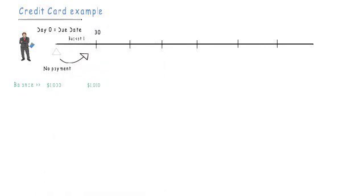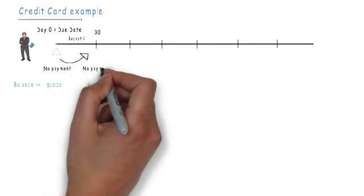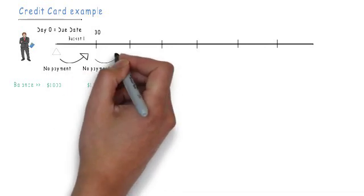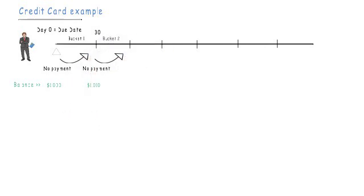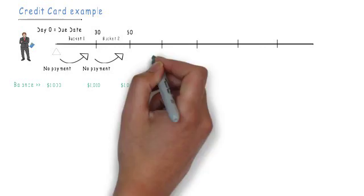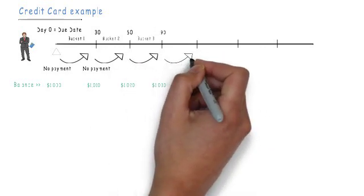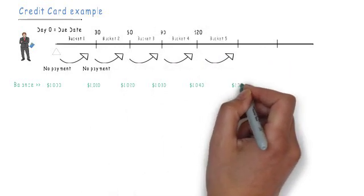Here, to keep things simple, we have made an assumption that ten dollars will be accrued as interest and fees charges every month. After a month, if the customer is still unable to make any payment, he will move from bucket one to bucket two, that is 30 to 59 days past due date. The balance will increase from thousand ten to thousand twenty dollars.